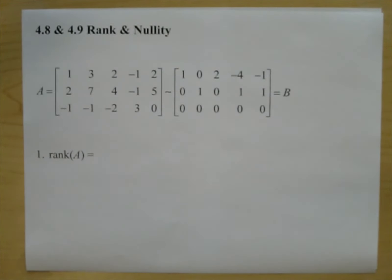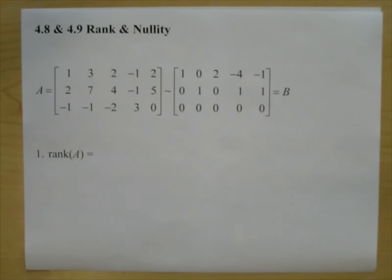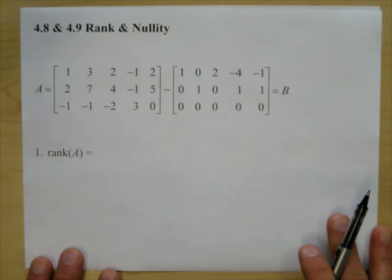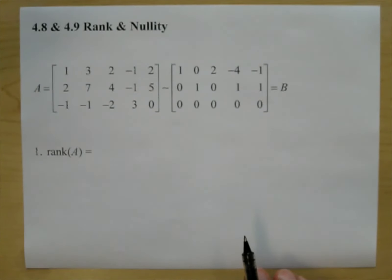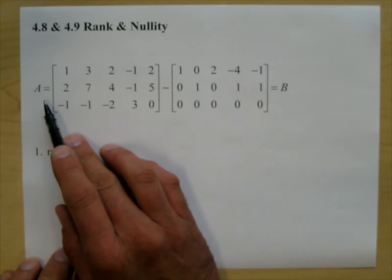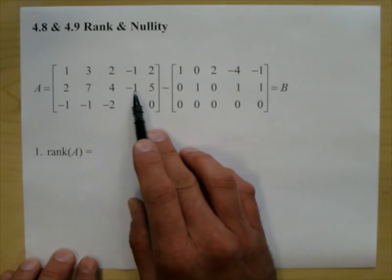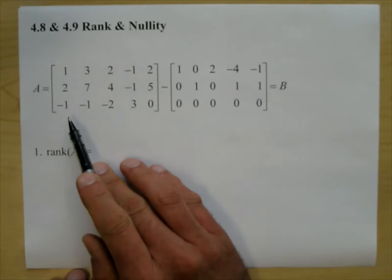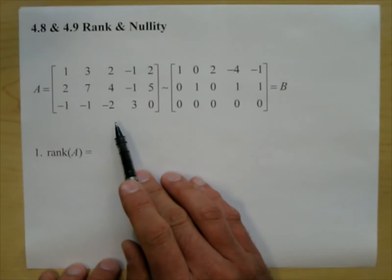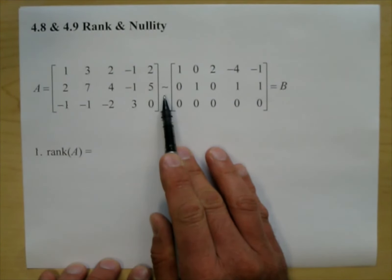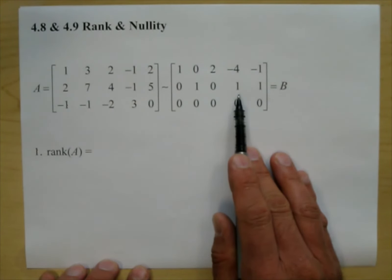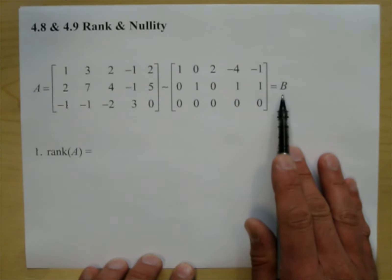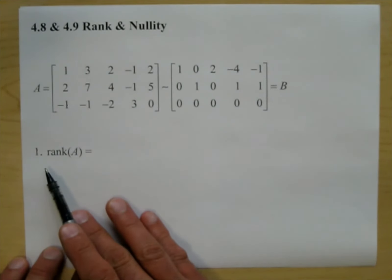Math 287 at Cuesta College. I'm Joe Vasta and today we are covering sections 4.8 and 4.9 — we'll do them all in one lecture. It's called rank and nullity. I have a matrix A, and I've done some row operations and put it in reduced row echelon form. I'm going to call this reduced row echelon form matrix B.